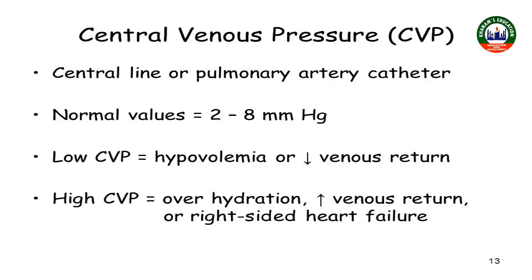The normal values of CVP: the normal range of CVP is 3 to 10 centimeters of H2O, which can also be expressed as 2 to 8 mmHg.